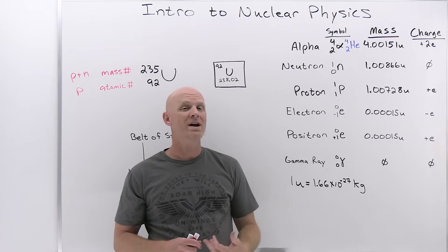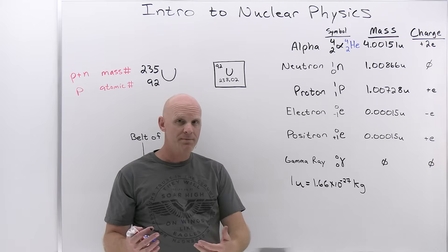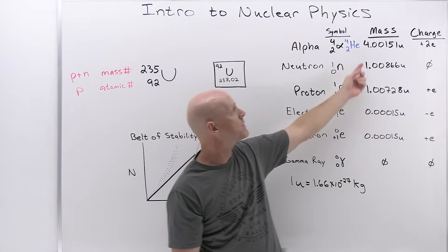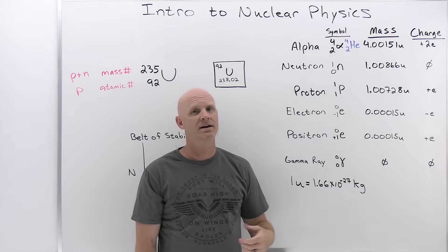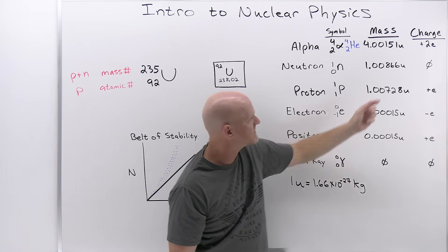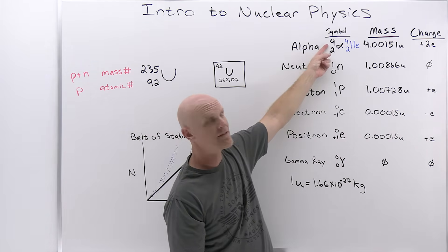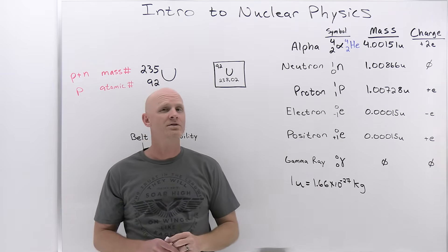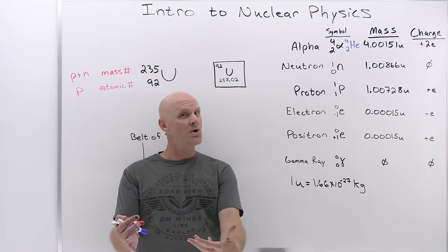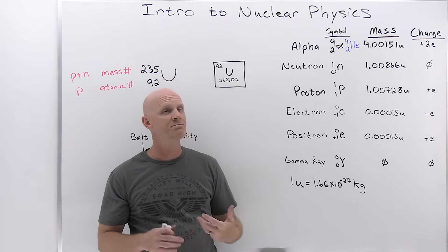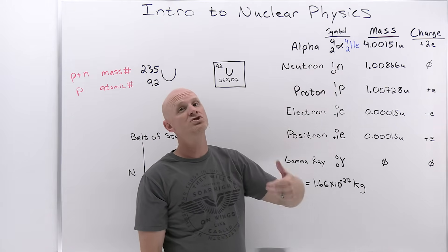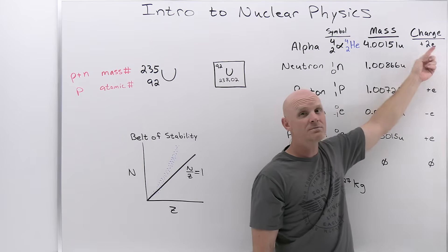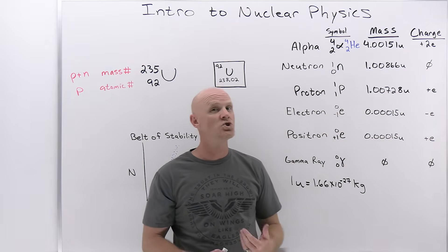Protons and neutrons both weigh approximately one unified mass unit. The alpha particle's mass is 4.00151 unified mass units. With two protons, recalling that the fundamental charge is 1.6×10⁻¹⁹ Coulombs — negative for electrons, but positive for protons — the alpha particle has a total charge of 2 times 1.6×10⁻¹⁹ Coulombs, since it has two protons and two neutrons, and neutrons are neutral.